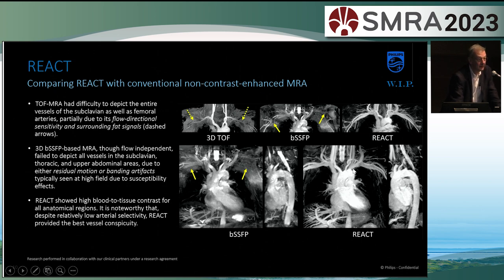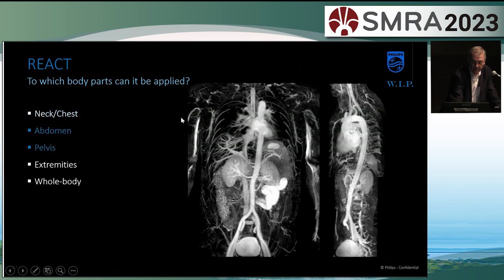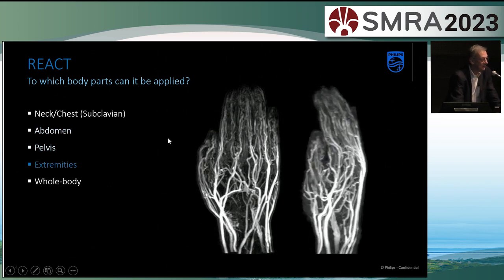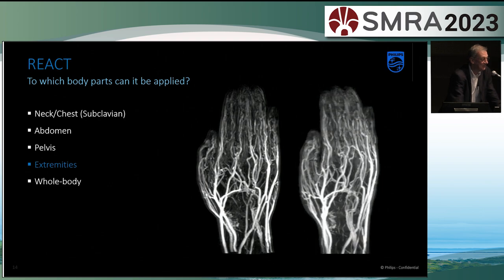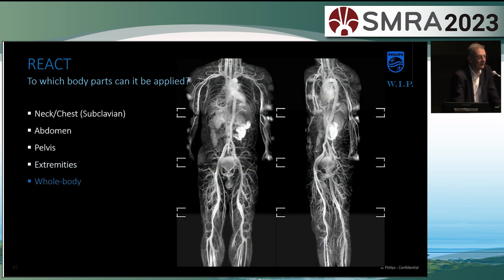Note that there is no arterial selectivity — you do image arteries and veins. You can do it in many body parts: neck, chest, abdomen — this is two stations with a big field of view. Extremities: hand, foot, arm, leg. And also whole body — a multi-station acquisition, four stations in this case.